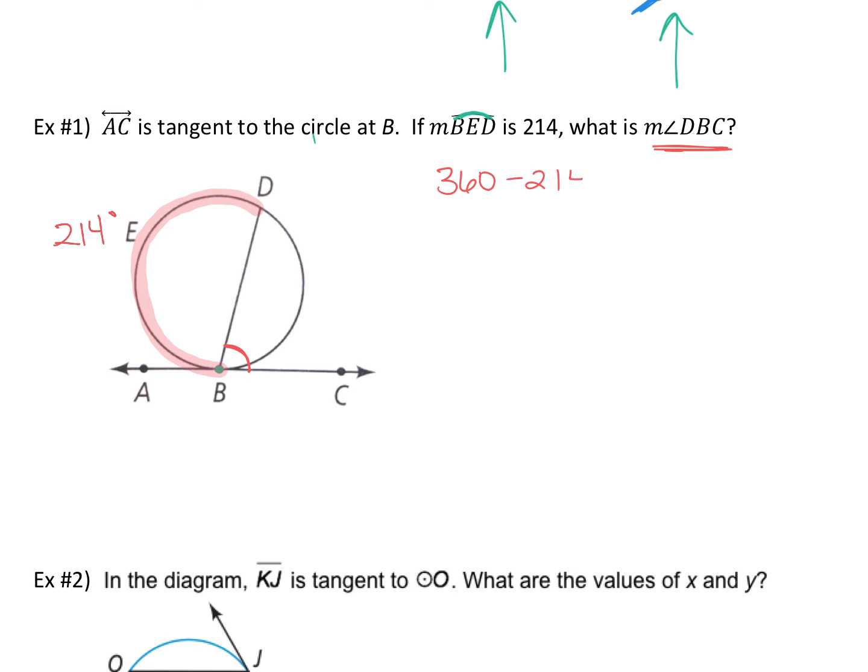You could do the first option that you guys said, 360 minus 214. 146 is that right? Yes, 146. So this arc would be 146 degrees and then what do you do to find the angle? Cut it in half. So if you cut that in half, 73 degrees is your answer. So that's method number one.